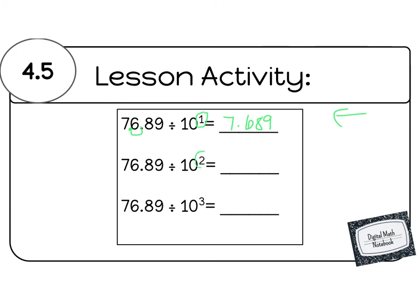Now we're going to divide by 10 to the power of 2. We know that 10 to the power of 2 is 100, and it has 2 zeros, so we're going to move 1, 2. So our decimal is now going to be 0.7689. And your job is to fill in this last box.